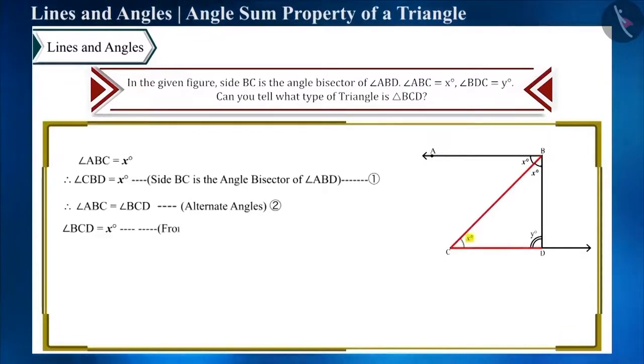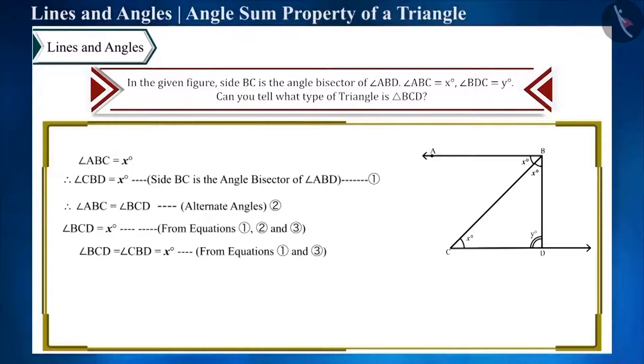And angle BCD is equal to angle CBD equals x degrees. That is, triangle BCD is an isosceles triangle.